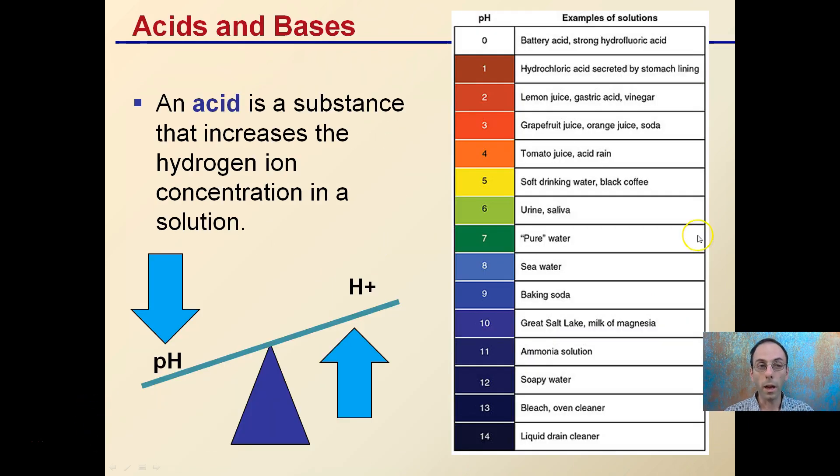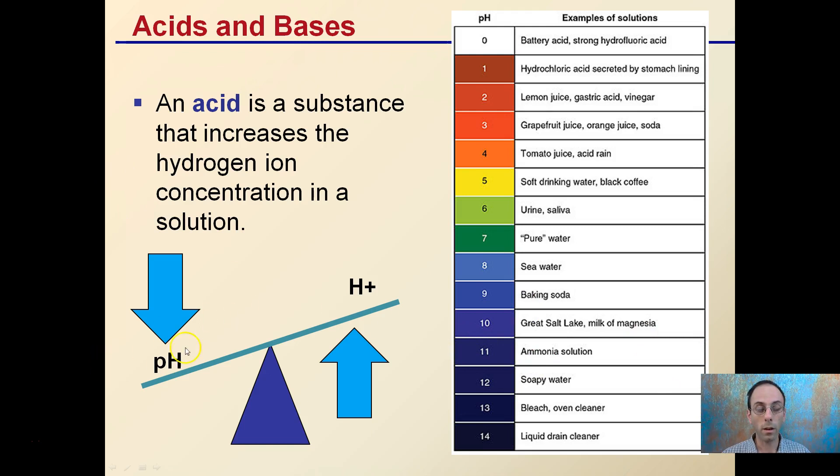Now, acids and bases. An acid is a substance that increases the hydrogen ion concentration of a solution. As the hydrogen ions increase, the pH will decrease. Examples of tomato juice, grapefruit juice, and lemon juice have increasing amounts of hydrogen ions. Therefore, the pH becomes lower.